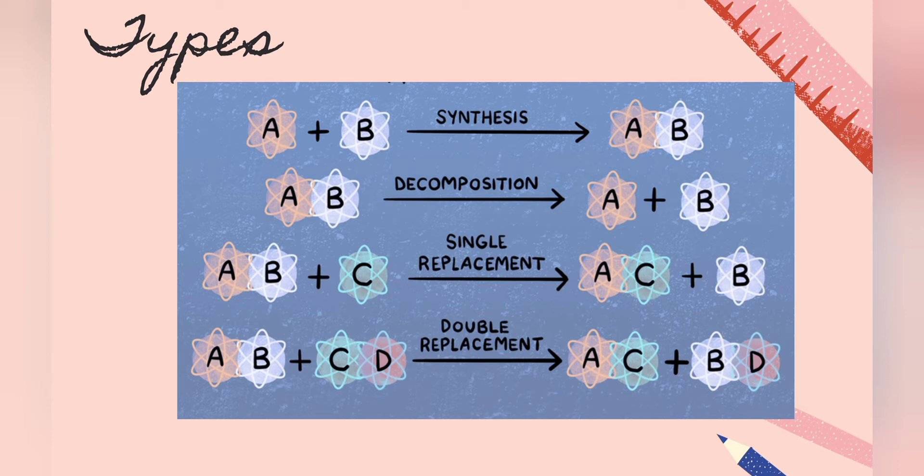The third type we have is the single replacement reaction, or the single displacement reaction. It is when a pure element switches places with another element in a compound. It is in the general form AB plus C to form AC plus B, or A plus BC to form AC plus B.